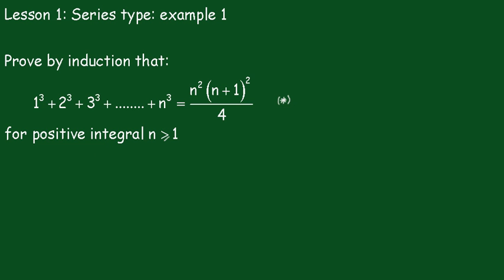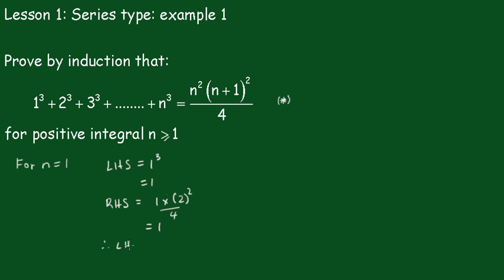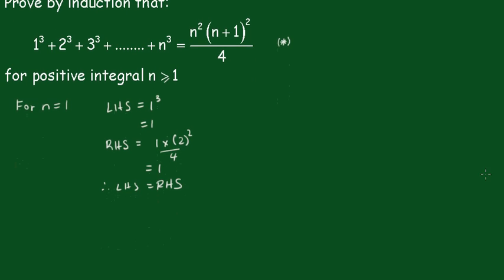Now, for n equals 1, we have the left hand side is just 1 cubed, which equals 1. The right hand side, substituting in n equals 1, is 1 squared, which is 1, times 2 squared over 4, which also equals 1. Therefore, the left hand side equals the right hand side. Therefore, the statement is true for n equals 1.